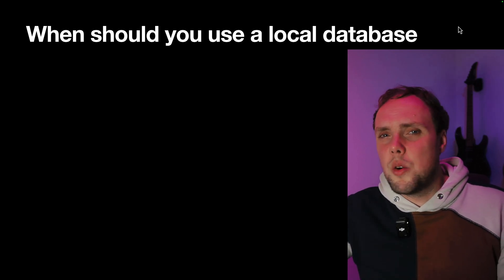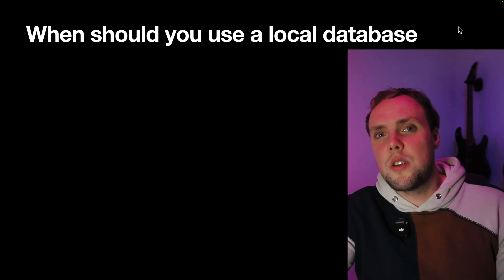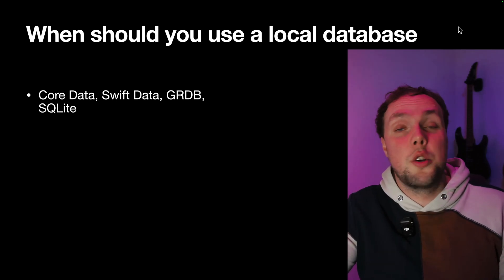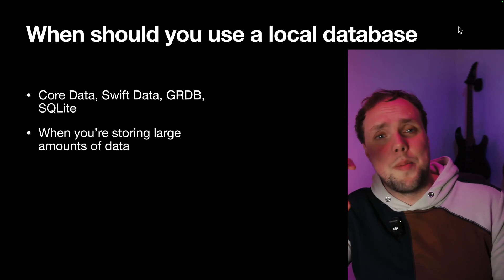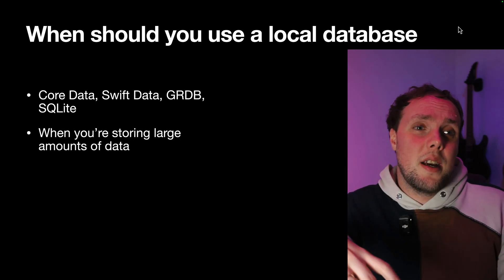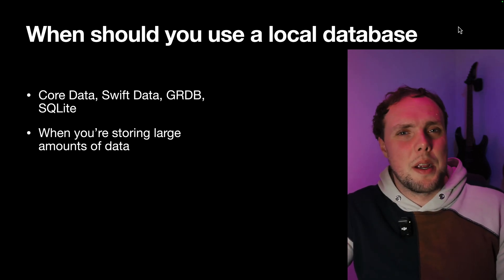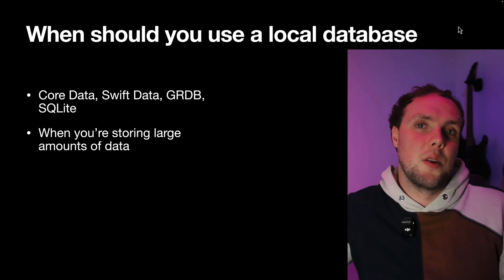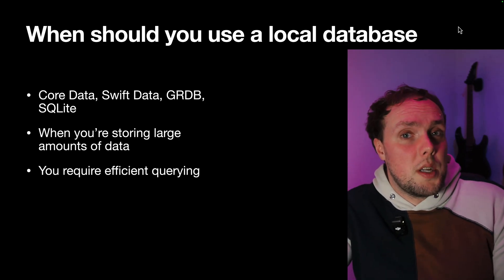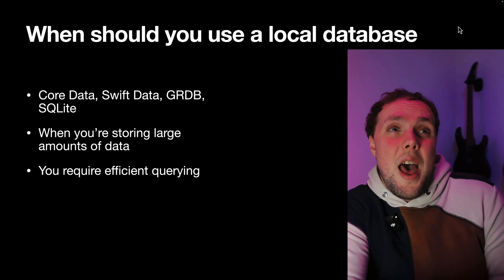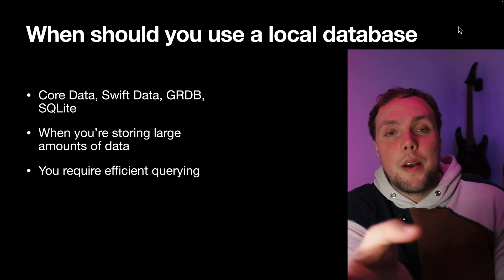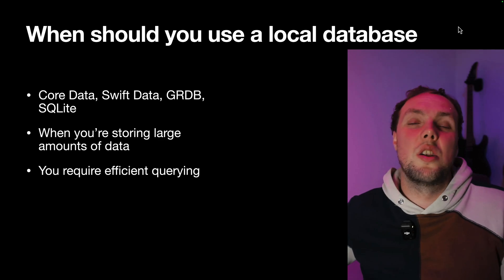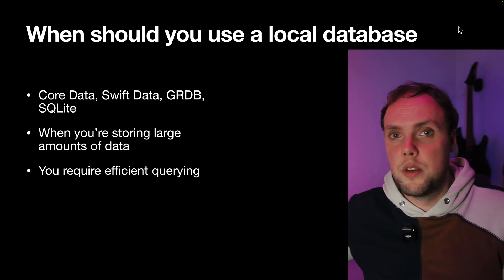So when should you use a local database? Databases like Core Data, SwiftData, GRDB, or plain SQLite are super useful for large amounts of data — probably something in the hundreds or even tens of megabytes with a lot of records where it becomes a problem to load everything into memory at once. You want some way to efficiently query your data, saying 'I have a couple thousand items in the database but I'm only interested in about 10 of them' — so only those items actually get loaded into memory. That's a lot more efficient than a JSON file holding everything.